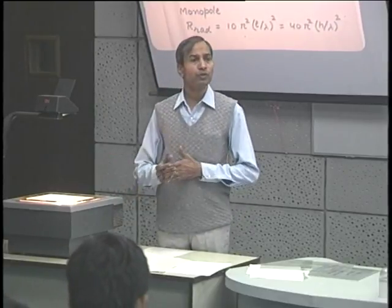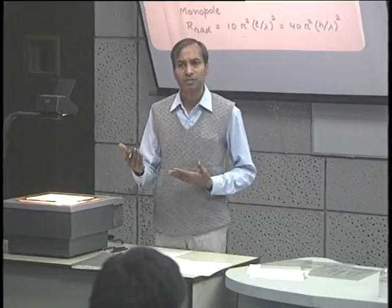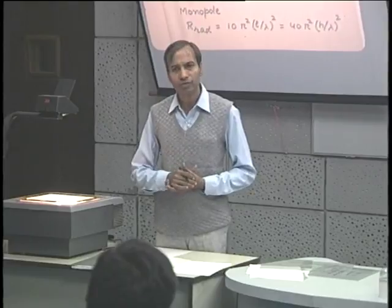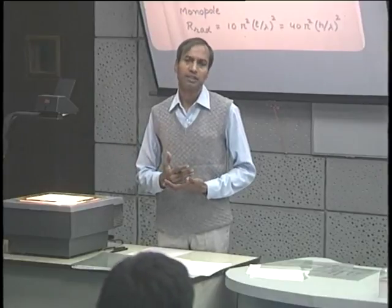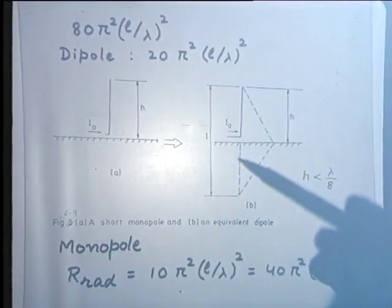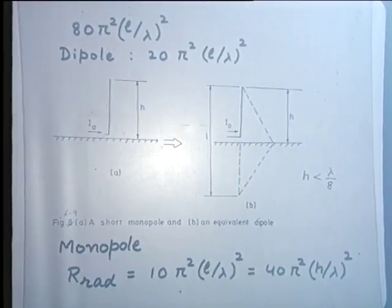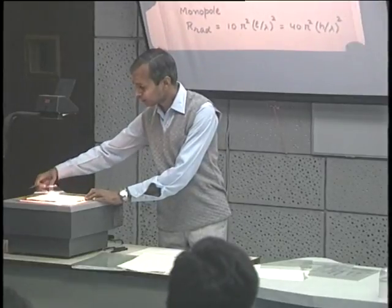What do we do if we want to increase the effectiveness of the antenna as a radiator? A simple step would be to increase the dimensions — increase the length in terms of wavelength. A very important antenna is the monopole antenna with a half-wavelength height, which will be more effective as a radiator. So, let us consider the longer antennas.